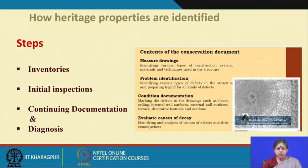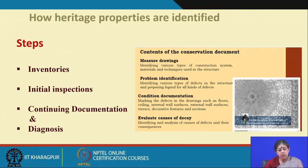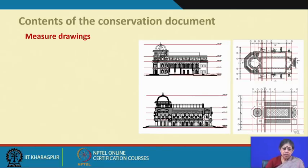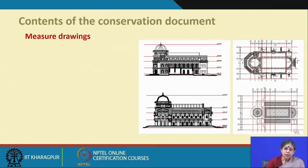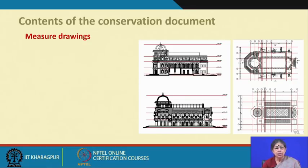The contents of a conservation document include a measured drawing, which is a very important part; problem identification; the condition document or condition assessment; and evaluating the causes. Measured drawing is the first and foremost task of conservation document preparation. If drawings are available, we can use them as a base and update further. If not, we have to prepare the measured drawing, which becomes a basic preliminary record.